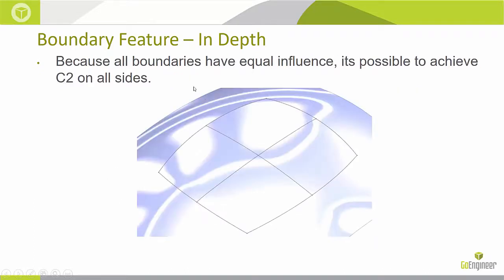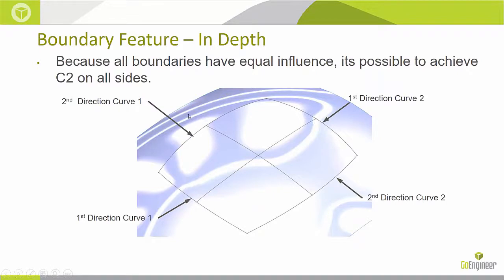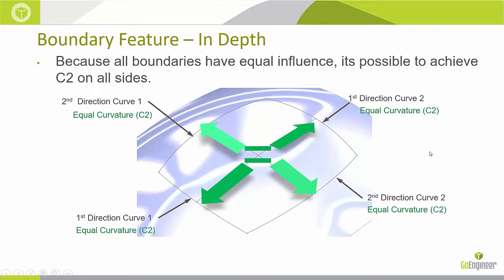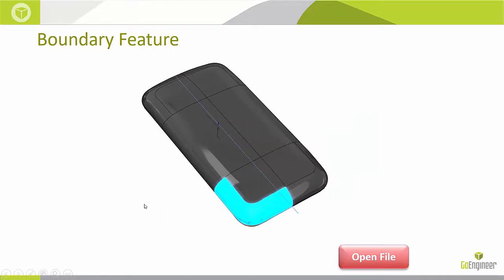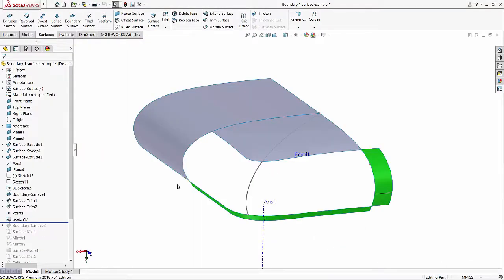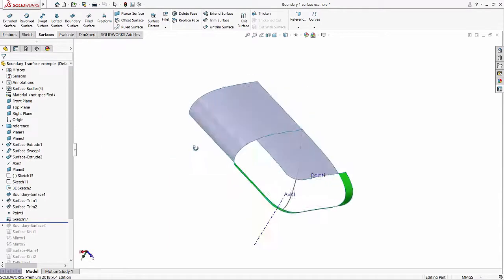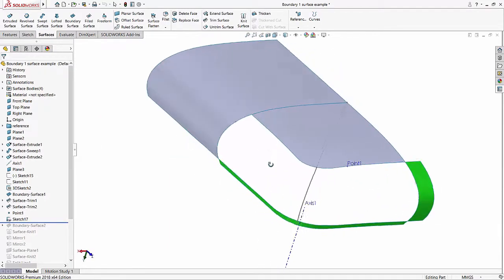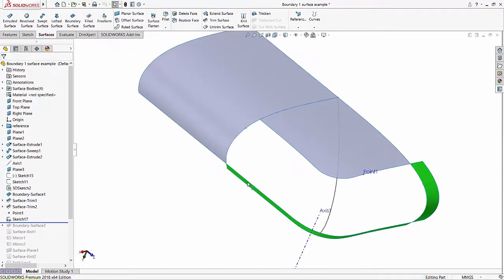I do have the ability to create equal curvatures on all four sides, which makes the boundary feature a little more important — and fun — to use. I've got an incomplete model of an iPhone cover and I want to finish it by creating a surface that uses equal curvatures in all directions. I'll open up SOLIDWORKS, and here is my incomplete model with some edges and sketches to work with. I'll go into the surfacing tab and select the boundary surface tool.